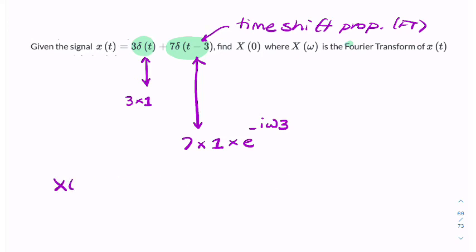is equal to 3 plus, and I got the plus from there, 7 times e to the minus i3 omega.